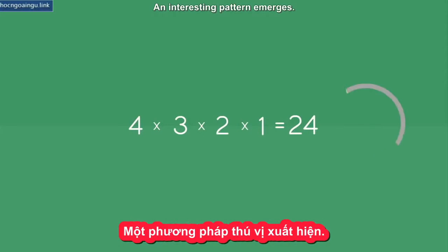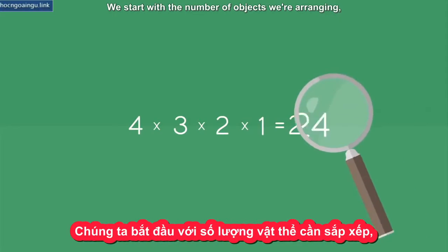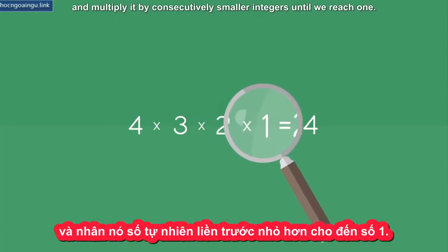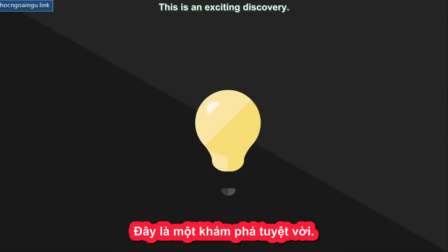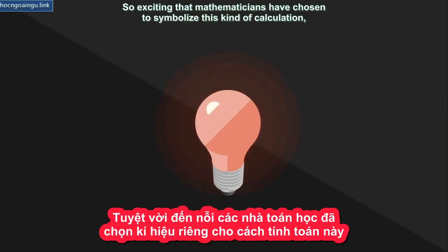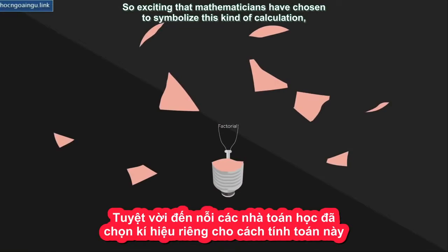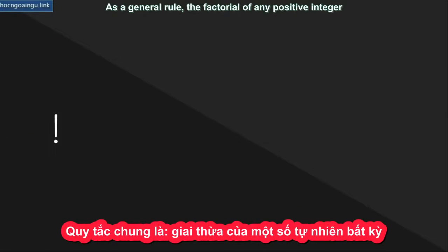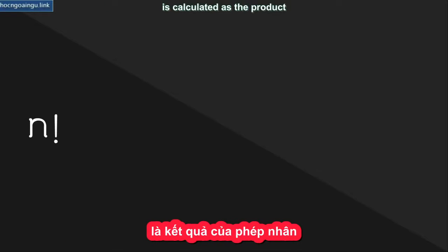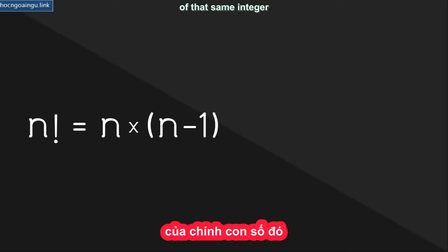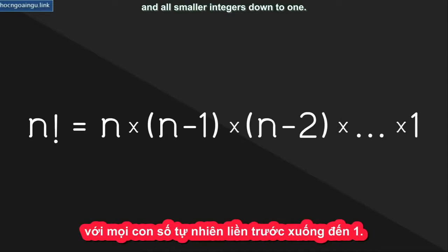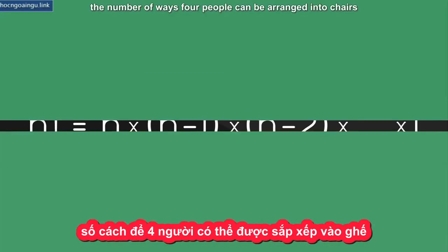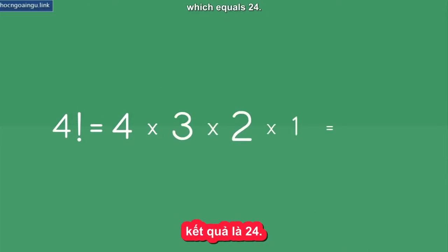An interesting pattern emerges. We start with the number of objects we're arranging — four in this case — and multiply it by consecutively smaller integers until we reach one. This is an exciting discovery, so exciting that mathematicians have chosen to symbolize this kind of calculation, known as a factorial, with an exclamation mark. As a general rule, the factorial of any positive integer is calculated as the product of that same integer and all smaller integers down to one. In our simple example, the number of ways four people can be arranged into chairs is written as four factorial, which equals 24.